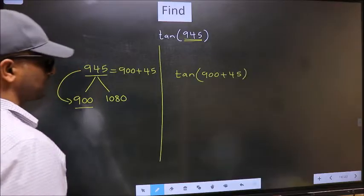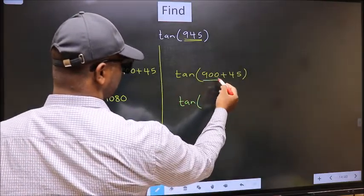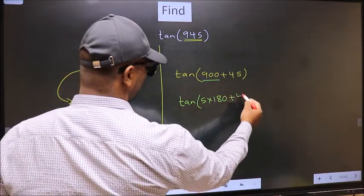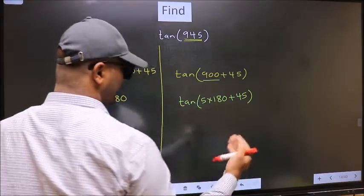Next, tan in place of this, now we write 5 × 180 plus 45.